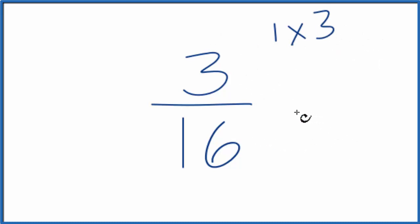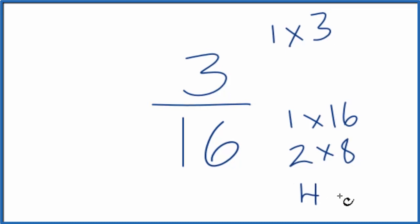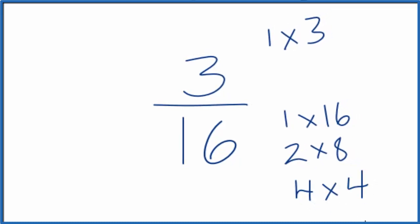For 16, we could have 1 times 16, 2 times 8. 3 doesn't go evenly into 16, but 4 times 4, that gives us 16. That's pretty much it.